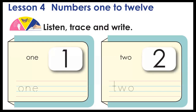Now we're going to write the numbers from 1 to 12. We already know how to write them in numbers, and now we're going to learn how to write them in words. One — how do we spell one? O-N-E, one. Try writing it in your book. O-N-E, one. Next, two — how do we spell two?